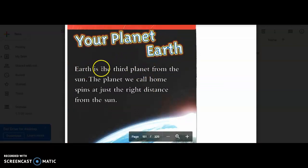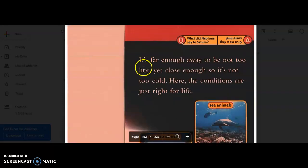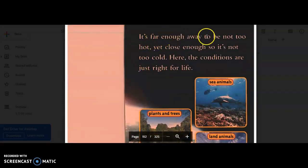Your planet Earth. Earth is the third planet from the sun. The planet we call home spins at just the right distance from the sun. That's a picture of Earth. It's far enough away to be not too hot, yet close enough so it's not too cold.